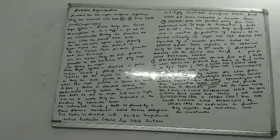Human beings show sexual dimorphism, that means the males and the females differ in primary and secondary sex characteristics. Primary sex characteristics are those which are present since birth, whether in a male or in a female. Secondary sex characteristics are those which are acquired after puberty or at the age of puberty.